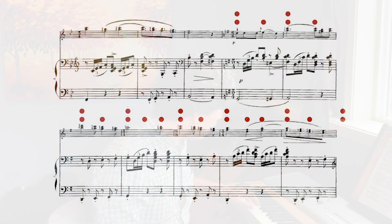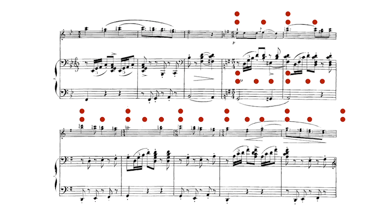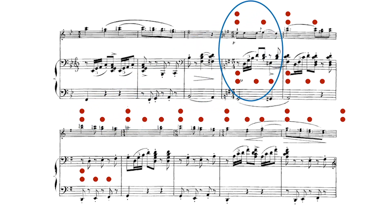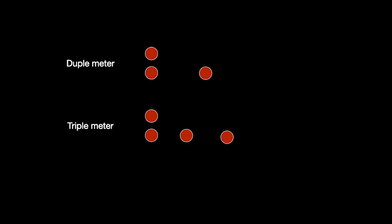The really cool thing about this José White example is that while the violin is doing this hemiola back and forth between 6/8 and 3/4, the piano stays in 3/4 the whole time. So you have duple meter and triple meter not only one after the other, but also at the same time. Some people call this a vertical hemiola — where you have triple and duple vertically aligned rather than horizontally aligned.